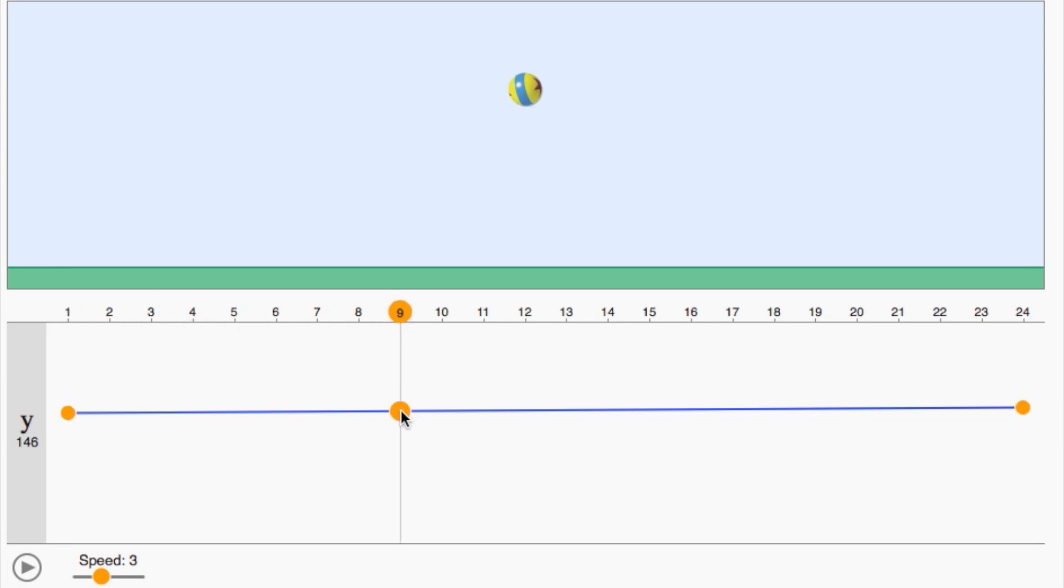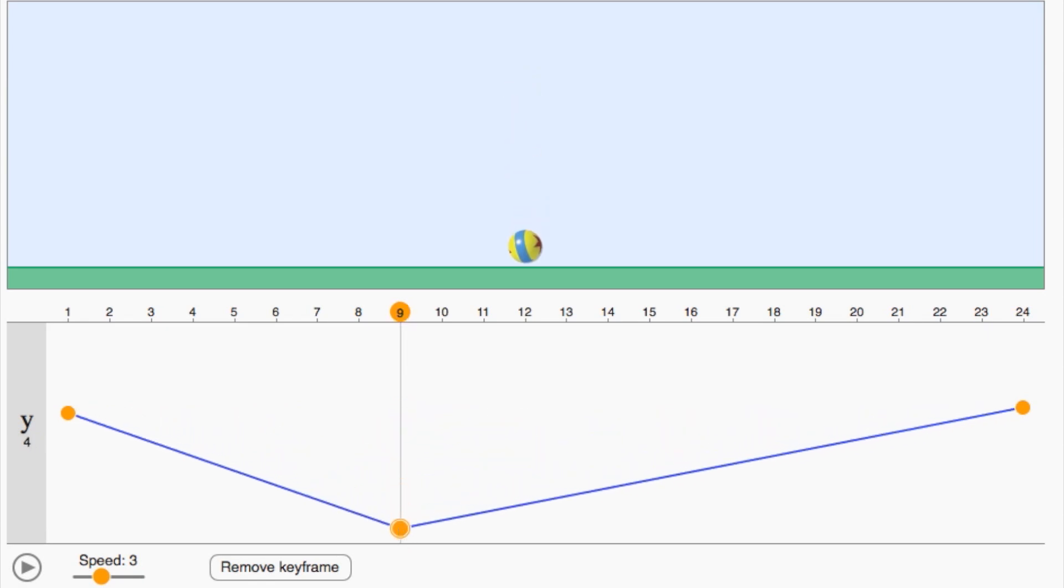Down below the picture, the computer shows us this graph. It's kind of like the 2D timing chart, and it shows us how the computer is going to calculate the in-between frames.